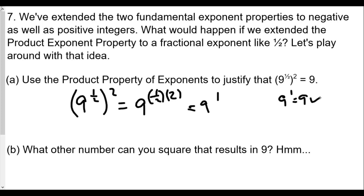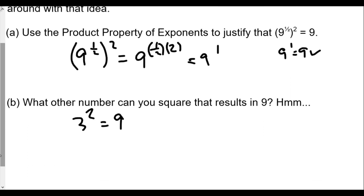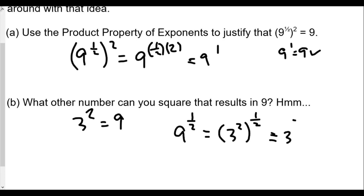What other number can you square to get nine? One squared is one, two squared is four, three squared is nine. So if we change nine into three squared, we get three squared to the one half power. Using the power rule, that's three to the two times one half, which equals three to the first — so nine to the one half equals three.